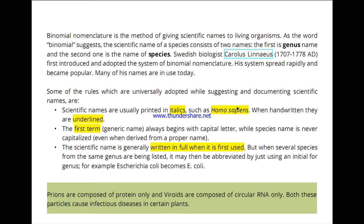The first letter of the genus name is a capital letter, and the first letter of the species name is a small letter. For example, you can write Homo sapiens — the genus Homo starts with a capital letter, and sapiens starts with a small letter.